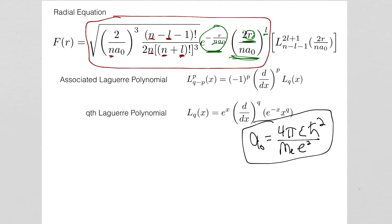The 'a' with subscript zero is something you wouldn't have seen before. It's really just a collection of constants from the original Schrödinger equation: h-bar squared, epsilon (the permittivity of free space), four pi, mass of the electron, and charge of the electron. We lump them all together and call it a₀. This is called the Bohr radius, and if you plug in all the constants it evaluates to 0.529 × 10⁻¹⁰ meters — an actual distance, which is why it's called a radius.